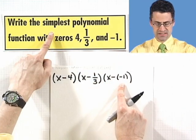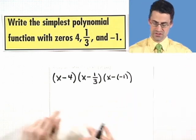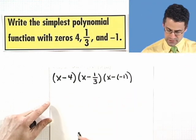And since I want the simplest such polynomial, I don't want to add on any other factors. So this is going to be it, rock bottom, lowest price.